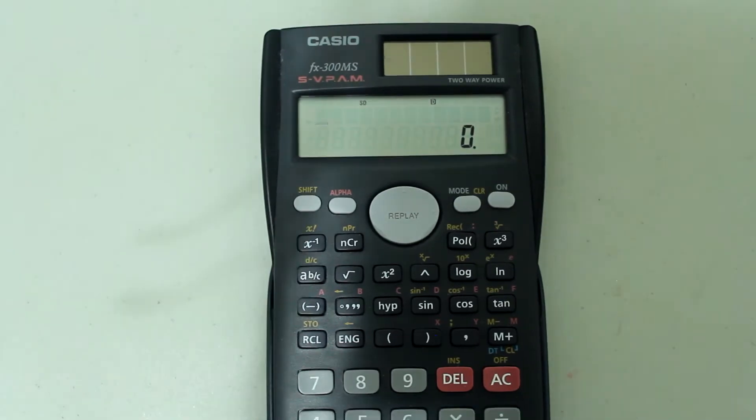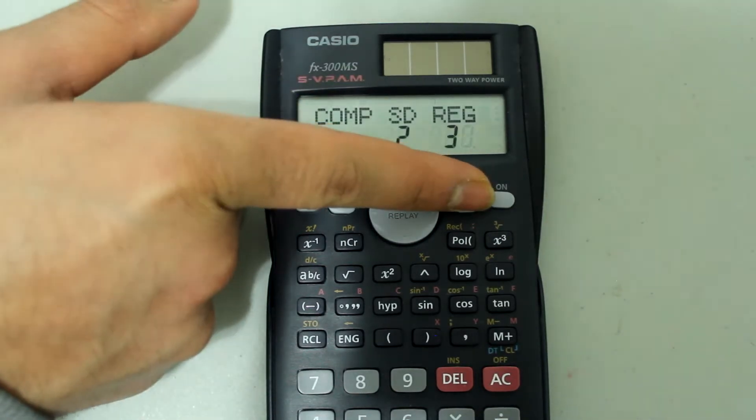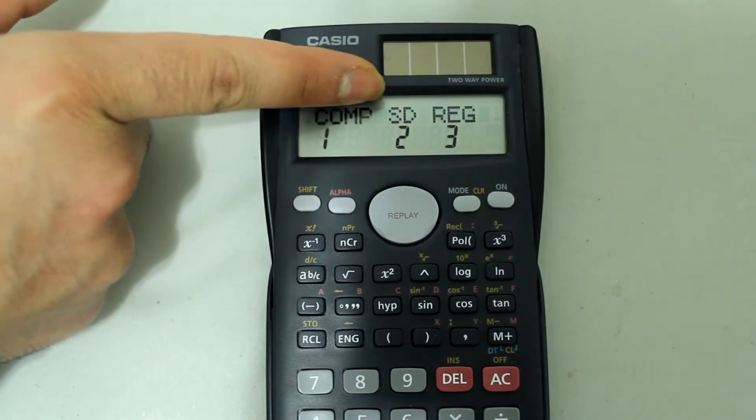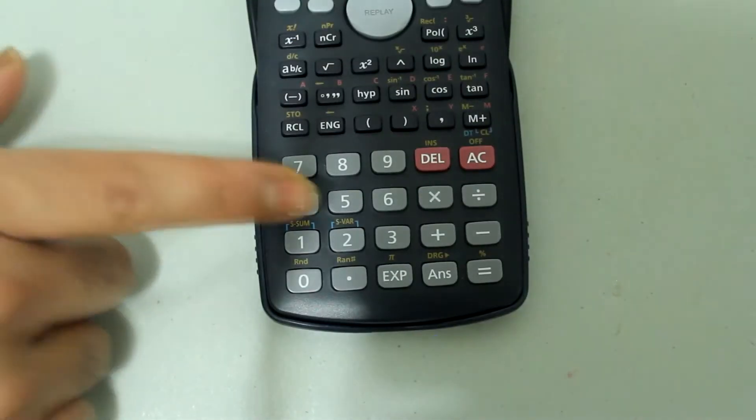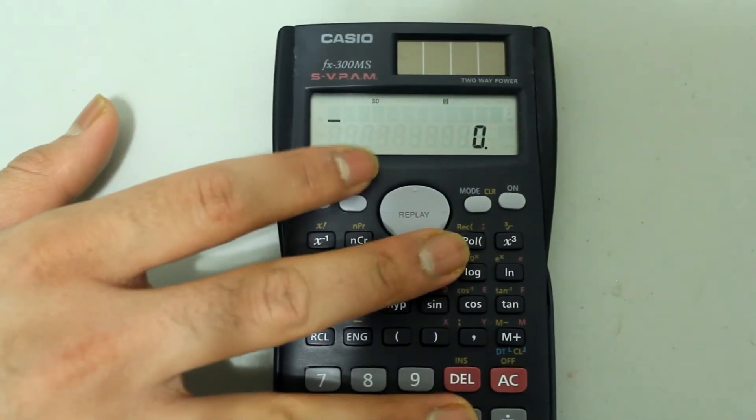First we need to switch the calculator to standard deviation mode. Press the mode button and we're going to select SD for standard deviation, which is 2, so press 2 on the number pad and now the calculator is in standard deviation mode.